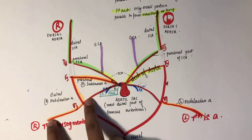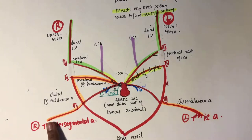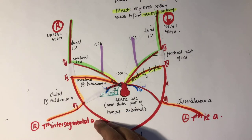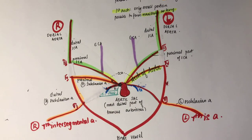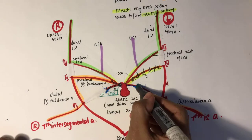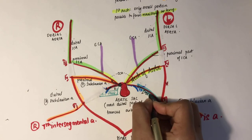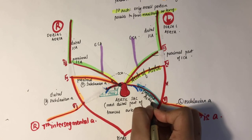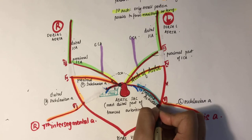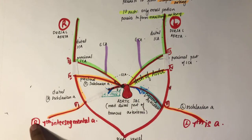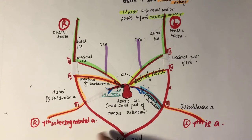The distal portion of the right sixth arch disappears — that is, the part not forming the pulmonary artery on the right side regresses. On the left side, however, this part persists to form the ductus arteriosus. Also, the right dorsal aorta caudal to the seventh intersegmental artery disappears.